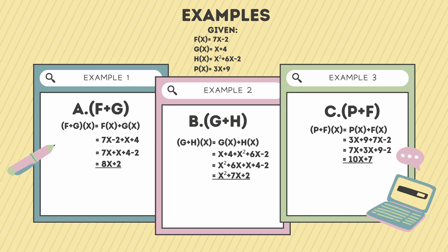After example 1, let's proceed to example 2: (g + h). (g + h)(x) = g(x) + h(x) = x + 4 + x² + 6x − 2 = x² + 6x + x + 4 − 2 = x² + 7x + 2.